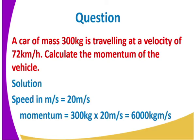Now let's look at the following question. A car of mass 300 kilograms is traveling at a velocity of 72 kilometers per hour. We are required to calculate the momentum of the vehicle. It is important to convert and work in SI units. The mass of the car is 300 kilograms. The velocity is given in kilometers per hour, so we need to convert 72 kilometers per hour into meters per second.